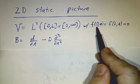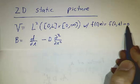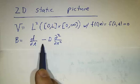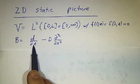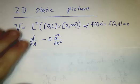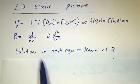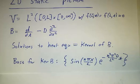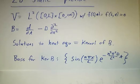The boundary conditions are that f(0) and f(L) are always zero. And we're looking at the operator derivative with respect to t minus d times second derivative with respect to x. And what we're solving the heat equation is the same thing as finding the kernel of B.